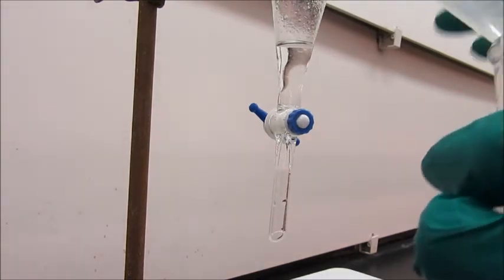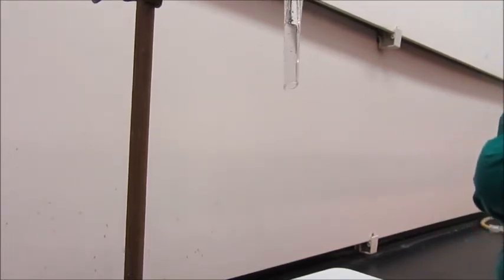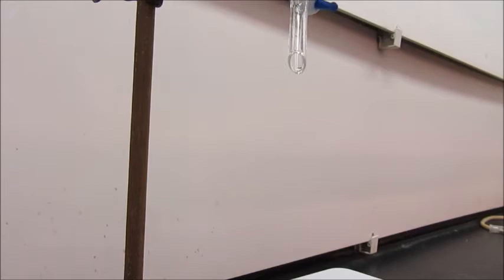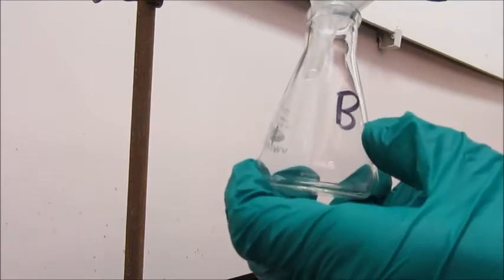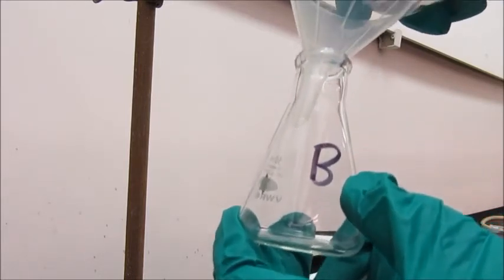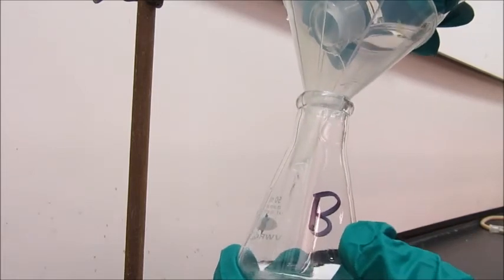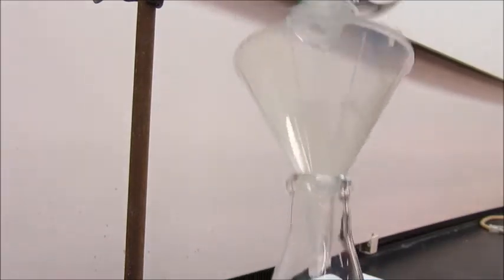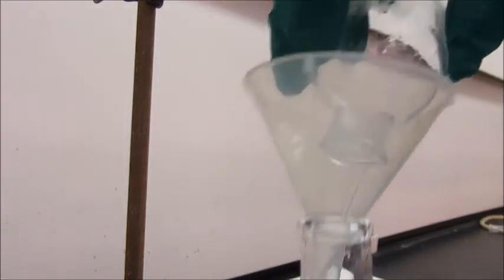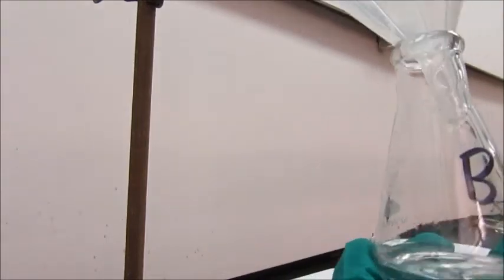And now I'm going to put the residual, the top layer, if I can get it out. I'll put the top layer into flask B. So I just have the separating funnel upside down there to tip it out.